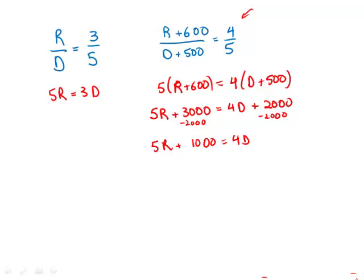Well, now notice that 5r equals 3d. So I can replace that 5r with 3d because they're equal. So 3d plus 1,000 equals 4d. Subtract 3d from both sides, and I get d equals 1,000.